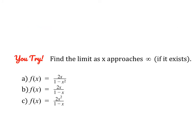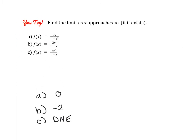Go ahead and pause the video and give these three a quick try. You should end up with 0 — degree on the bottom is larger. Negative 2 — the degrees are the same, so it's the ratio of the coefficients, 2 over negative 1. And does not exist because the degree on top is larger.